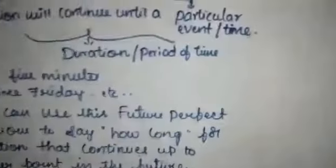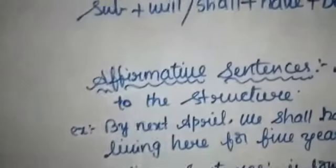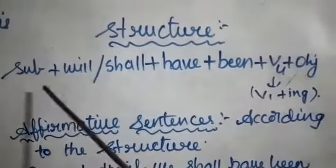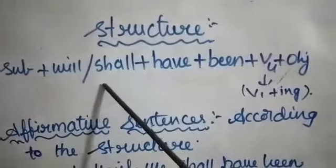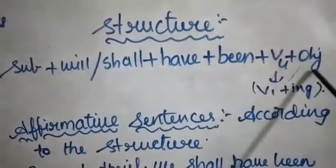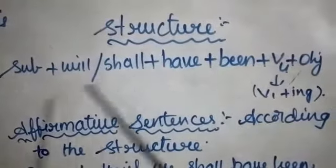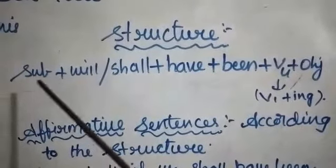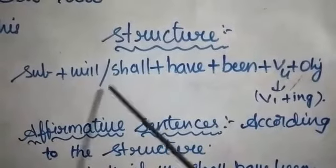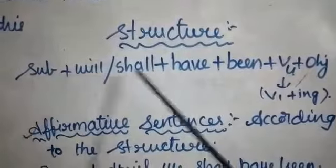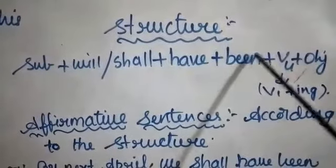Now we will see the structure. What is the structure of future perfect continuous tense? The structure is: Subject + will or shall + have + been + verb (before) + object. Subjects can be I, we, you, they, or anything. Will or shall is used according to the subject, then have + been.